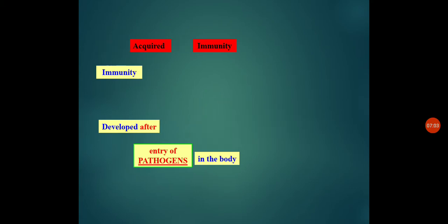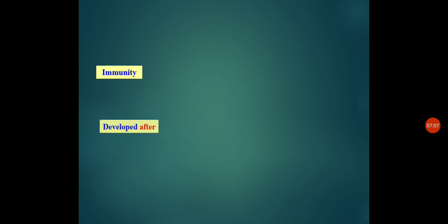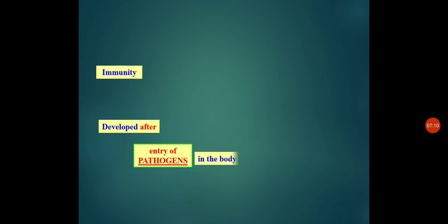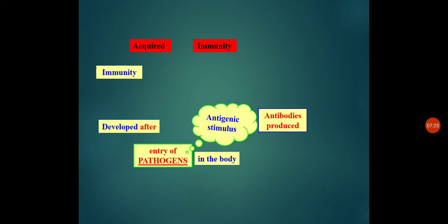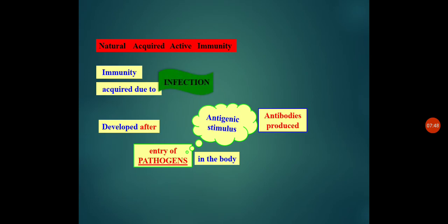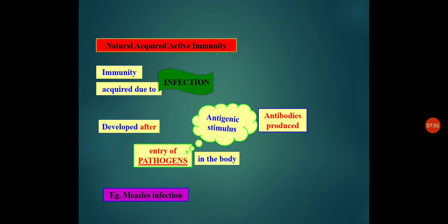Let me clarify once more. Immunity that is developed after entry of a pathogen in the body is known as acquired immunity. The antigenic stimulus which kick-starts or initiates antibody production in the system is known as active immunity. If all the process occurs in a natural way, then it is known as natural acquired active immunity — acquired mainly due to natural infections. Example: measles.